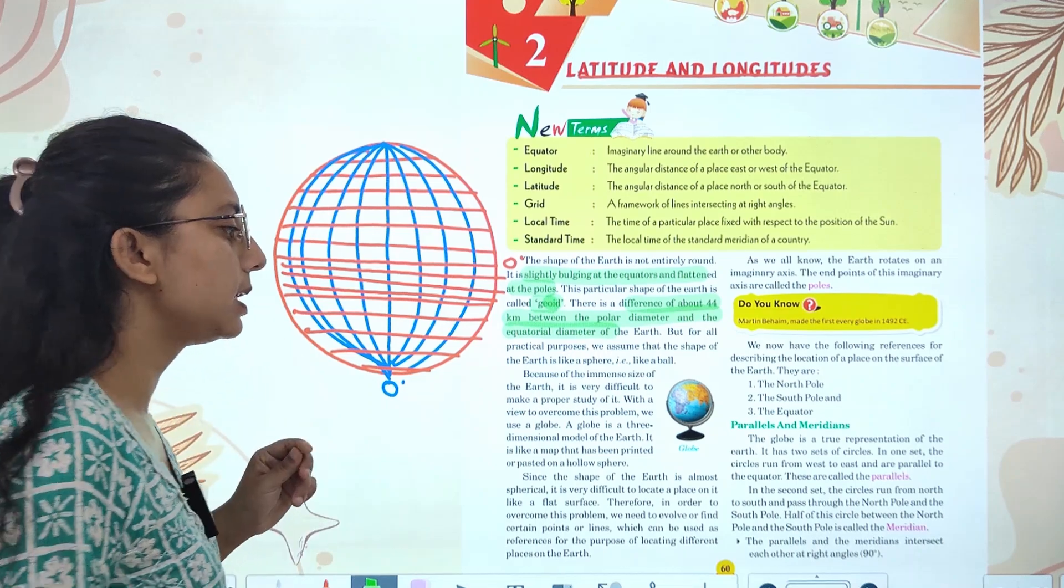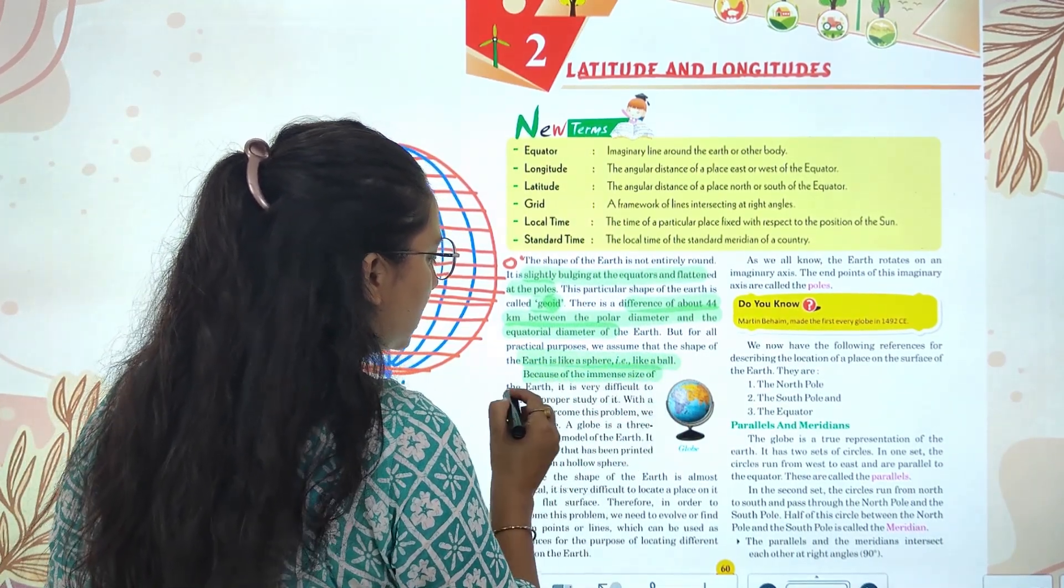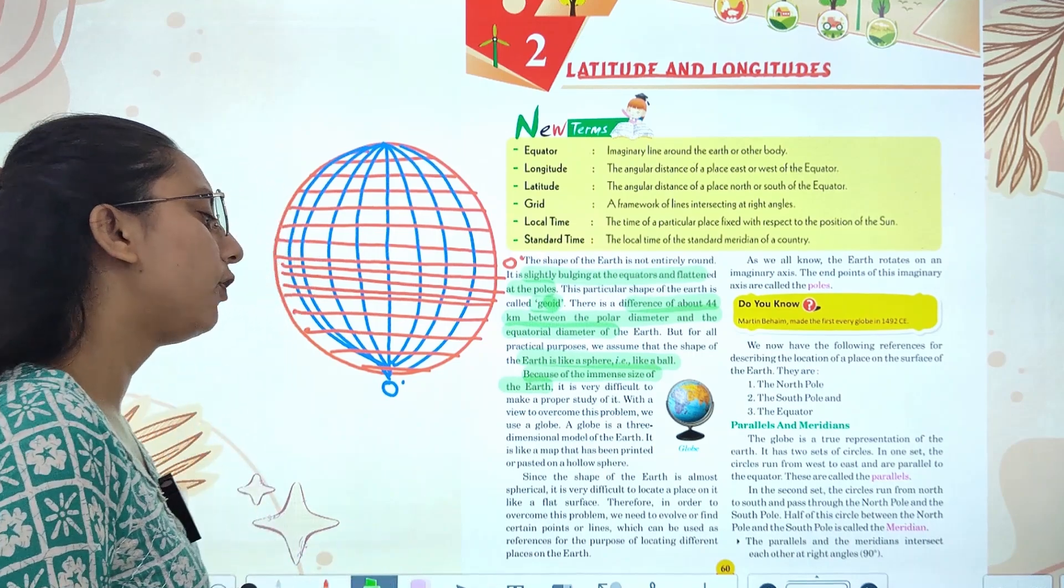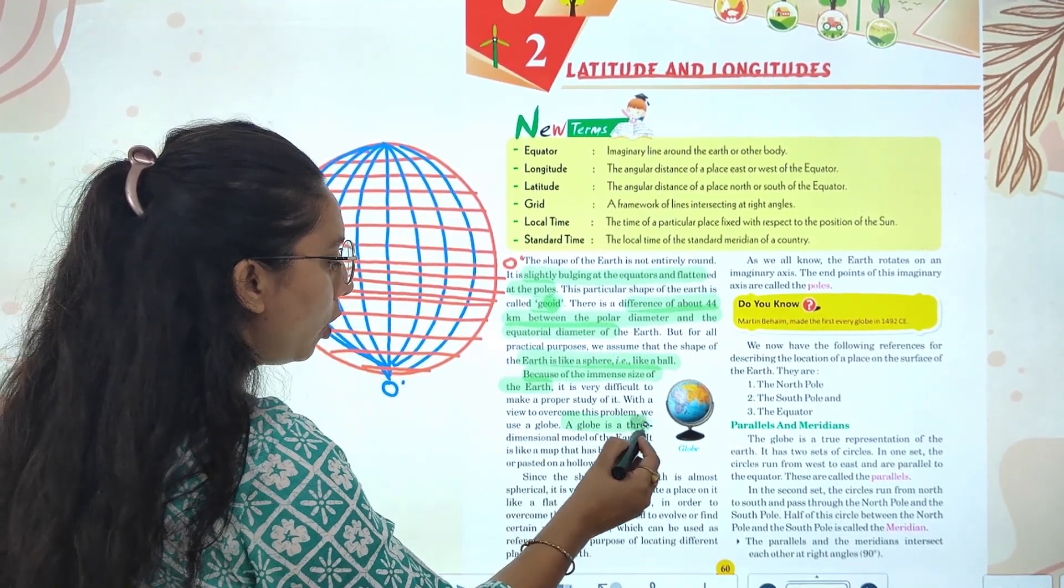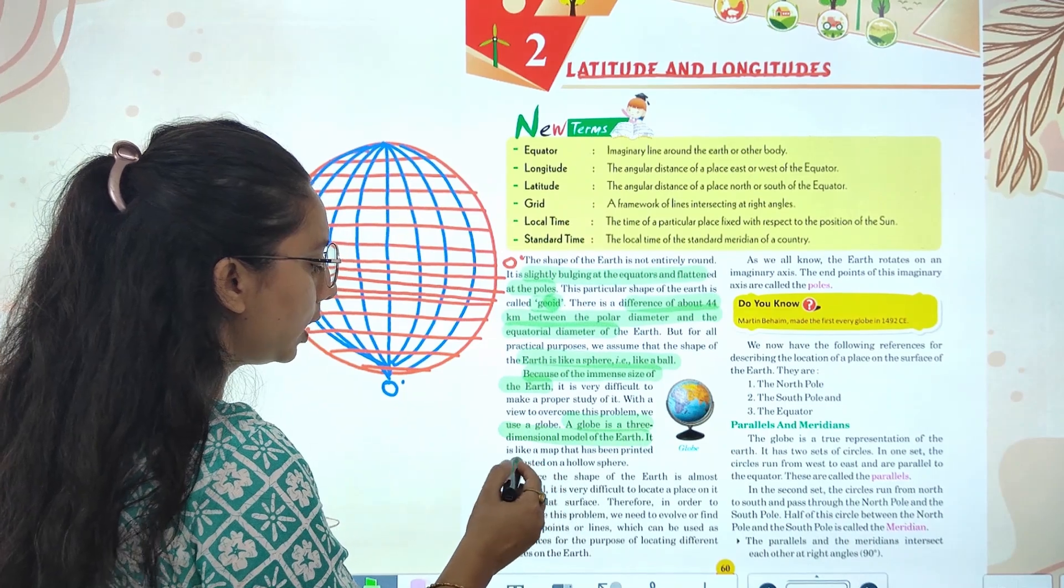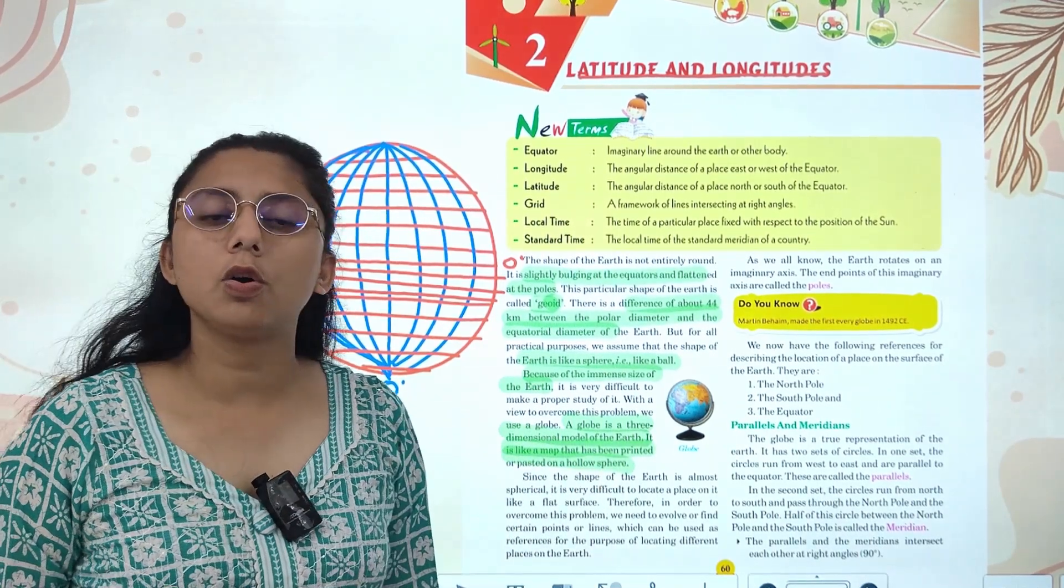But for practical purposes we are talking about the Earth's shape as a sphere because of the immense size of the Earth. A globe is a three-dimensional model of the Earth, like a map that has been printed or fixed on a spherical surface.